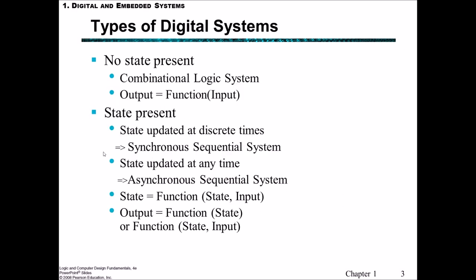So the two main types of digital systems: one being where there's no state present, which is a combinational logic system, so we have some input, a function, and output being a function of that input. The other case is where there's some state present. The state might be updated at discrete times with some timer, that would be a synchronous sequential system, or if it's updated at any time whatsoever without that clock, then it's asynchronous, an asynchronous sequential system.